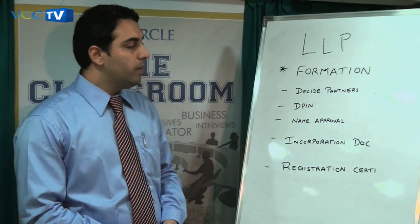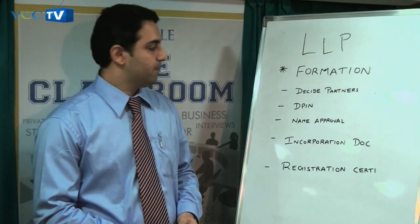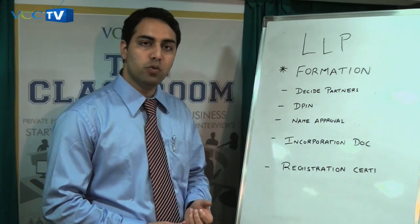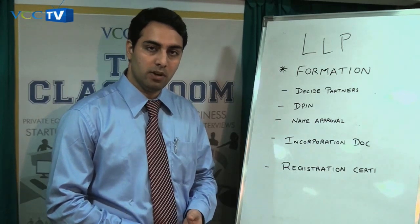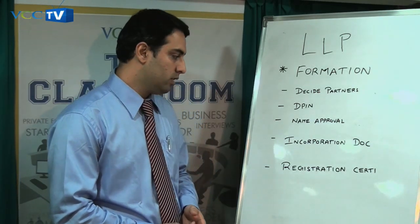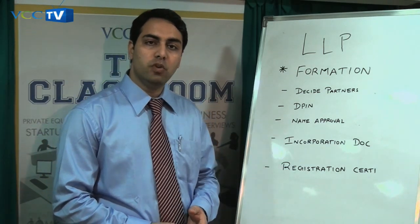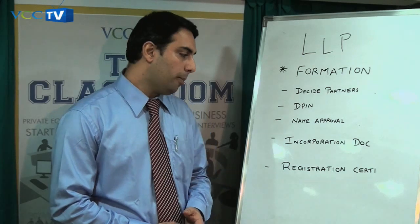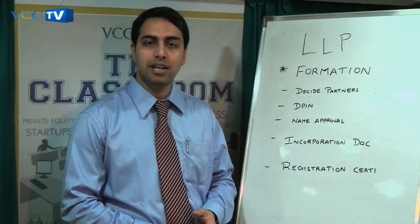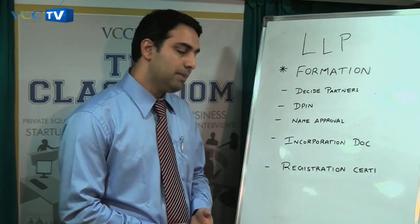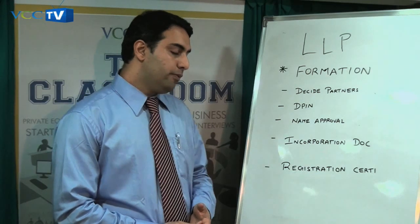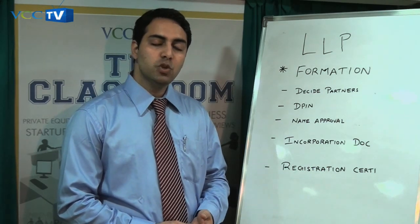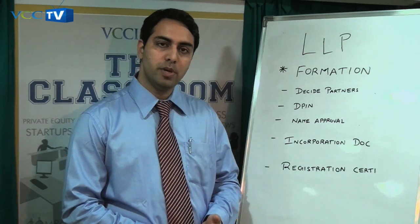Formation of LLP: the first step is to decide on the partners and designated partners who will form part of the LLP. Next, obtain the designated partner's identification number. Thereafter, apply for name approval before the ROC of the state in which the registered office is to be situated. Draft the LLP agreement, and once you obtain name approval from the ROC, file the incorporation document along with other required documents. The incorporation document contains the name of the LLP, the proposed business, and the names of the partners. Within 14 days from completion of all formalities, the ROC issues the registration certificate, upon which the LLP comes into existence and enjoys perpetual succession.